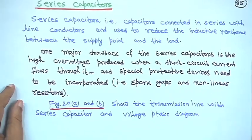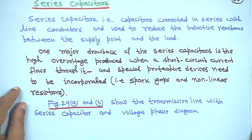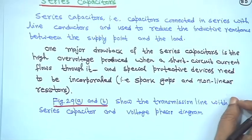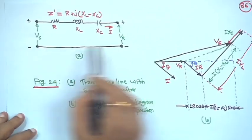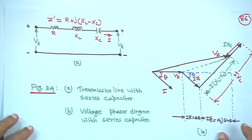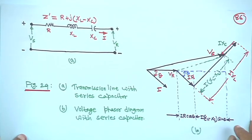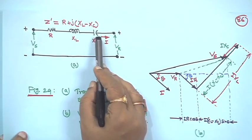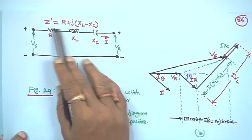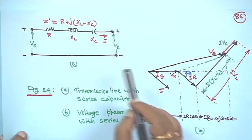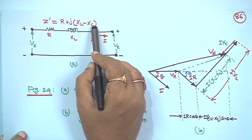When connecting a series capacitor in a line, a lot of protection is needed and one must be very careful. In the series capacitor circuit, with sending end voltage V_S and receiving end voltage V_R, the line has resistance R and reactance X_L, and the series capacitor is in series. The impedance becomes Z_dash = R + j(X_L − X_C). Because of X_C, the X_L − X_C component reduces, naturally reducing the voltage drop and improving the receiving end voltage.